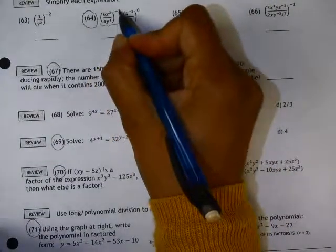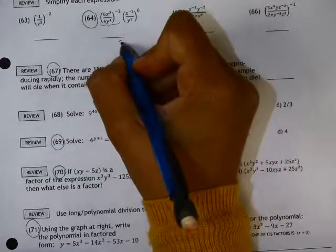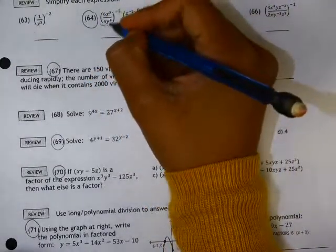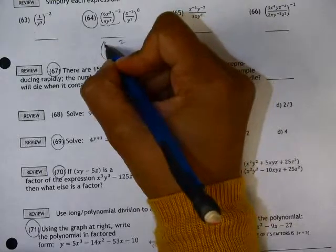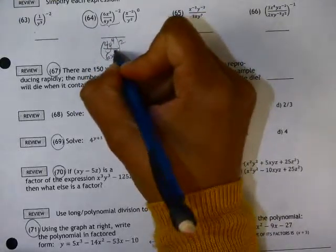Here we have a negative exponent. We can change that to a positive 2 if we make this the reciprocal of itself. So 4y to the 4th goes on the top, 6x cubed goes on the bottom.